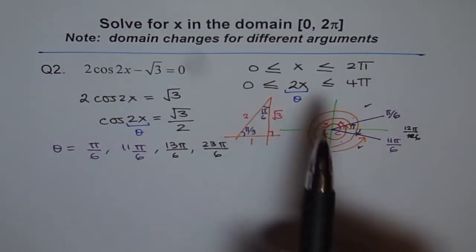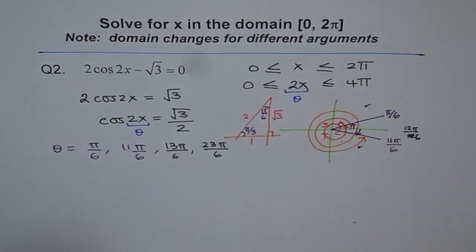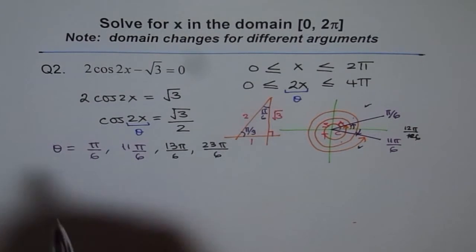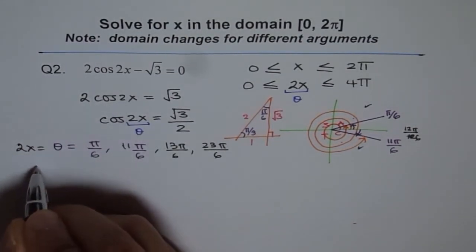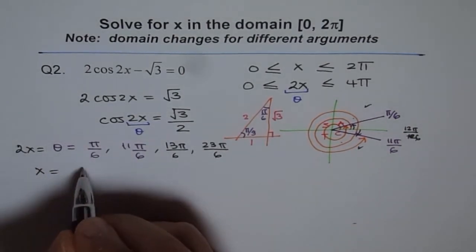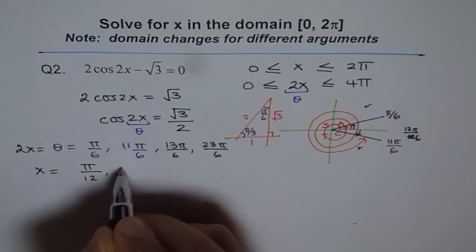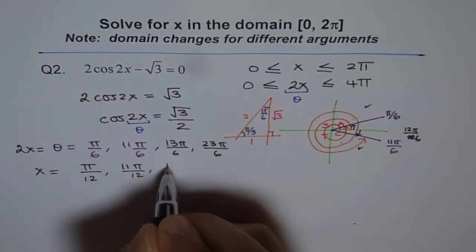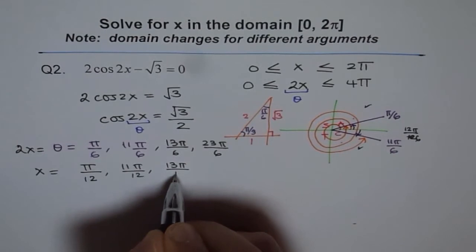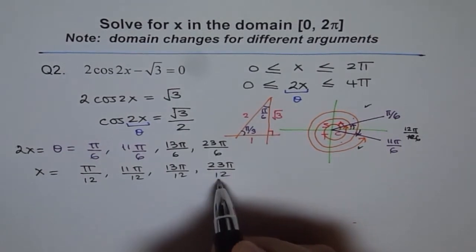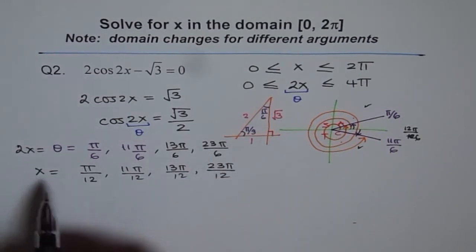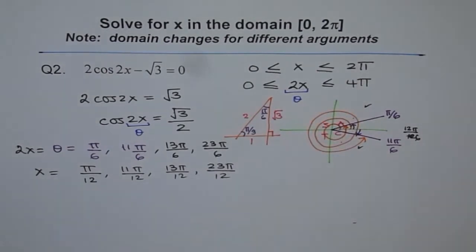So if you don't consider this domain change, then you lose these two, and you lose half the marks. Now that is 2x. So this is actually 2x equals to all this. So what is x equals to? Divide by 2. So the possible answers for x is π by 12, 11 π by 12, 13 π by 12, and 23 π by 12. 23 π by 12 is less than 2π. 24 π by 12 is 2π. So you'll see x is within your domain of 0 to 2π.